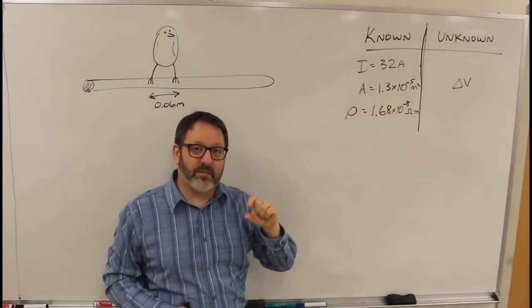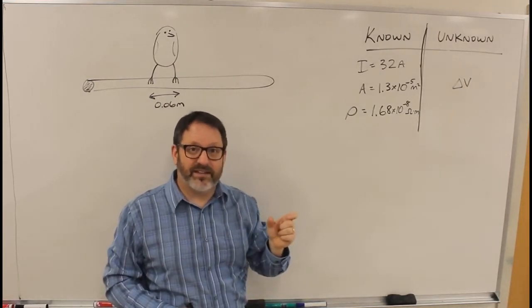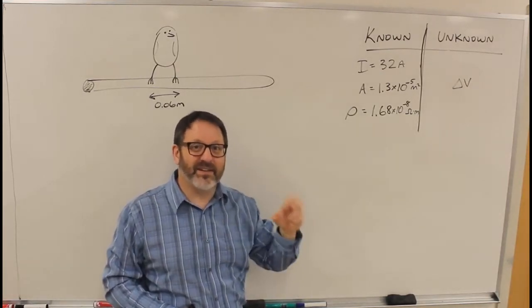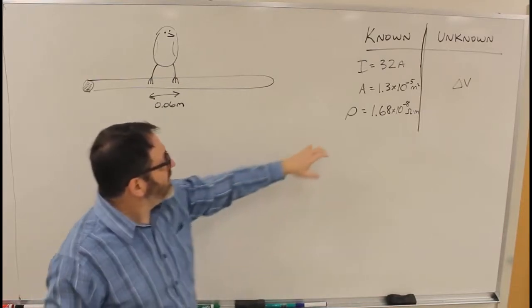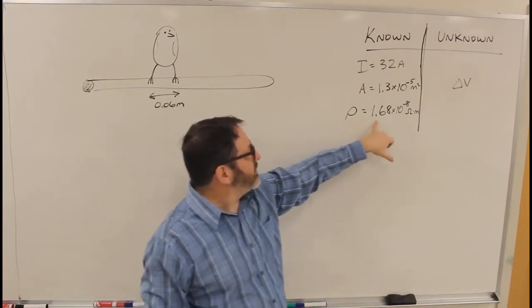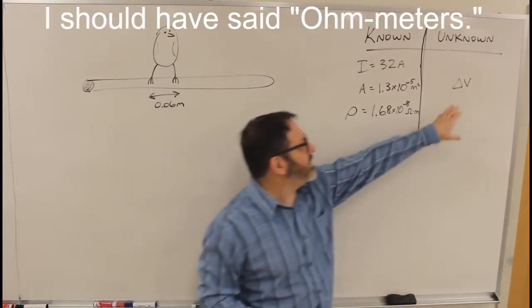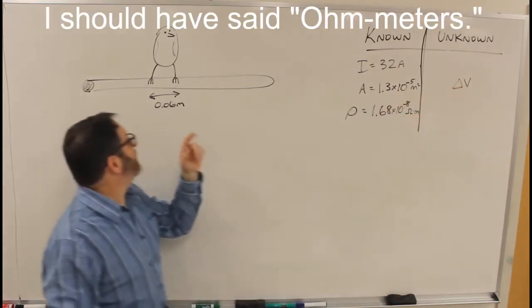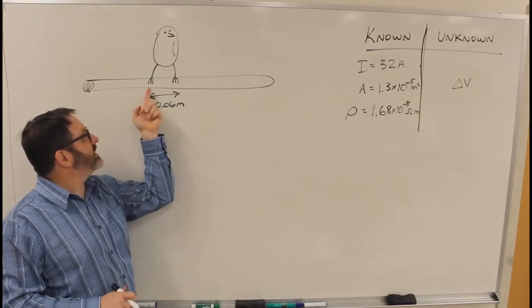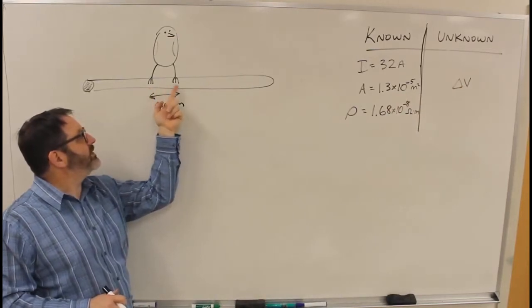So I had to divide that by a hundred twice to go from centimeters to meters squared. The resistivity of copper is 1.68 times 10 to the minus 8 ohms per meter. And the thing I'm looking for is the difference in the voltage, the change in electric potential from one side of the bird to the other.